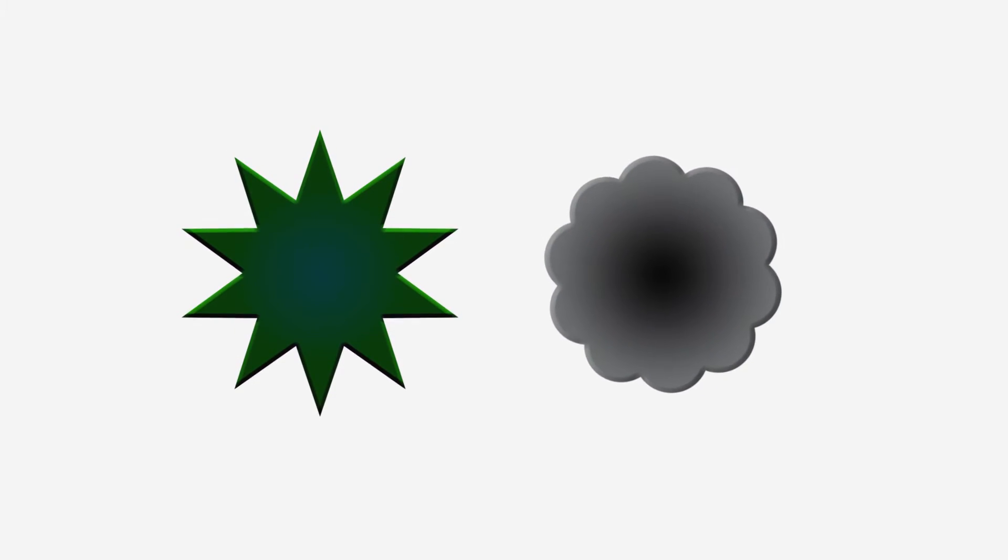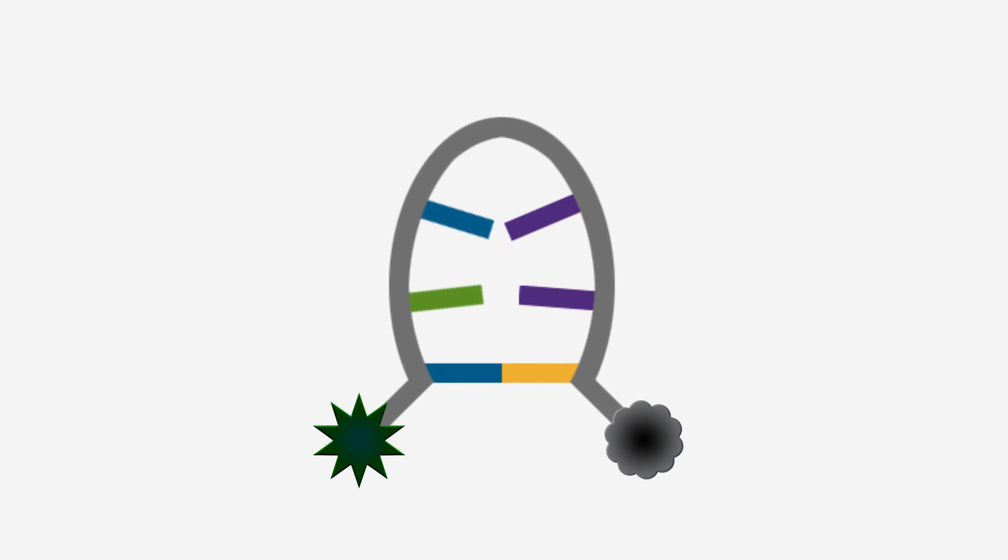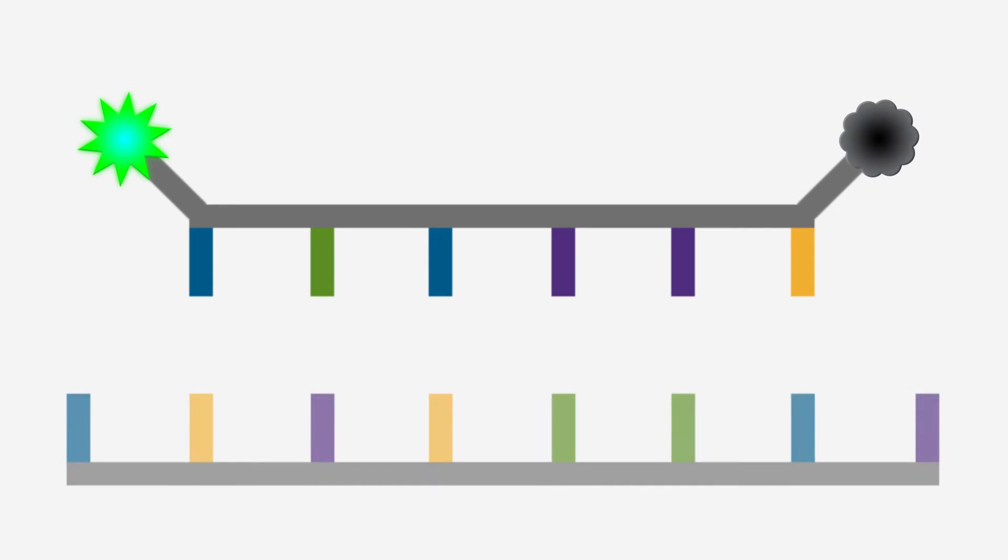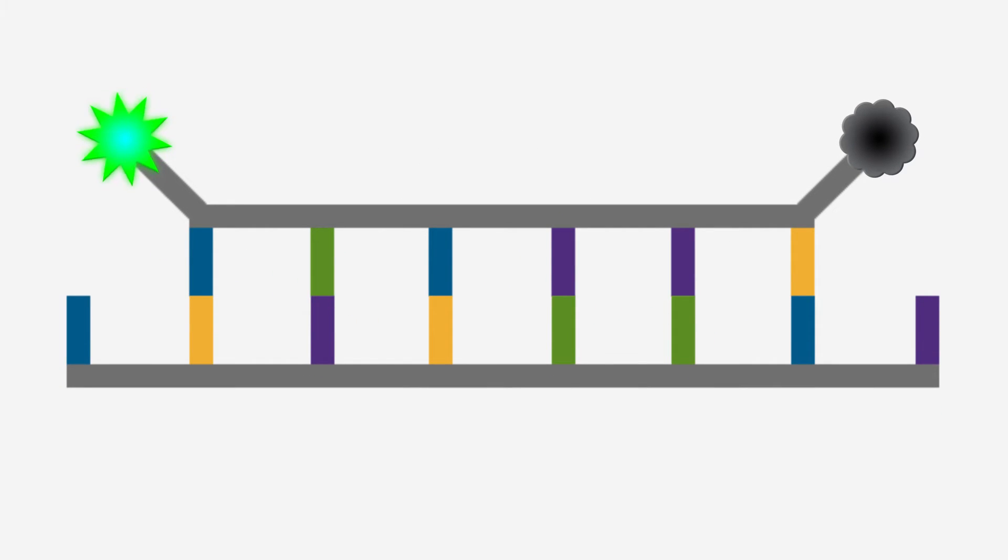Here are two examples of how quenchers can be utilized. Quenchers can be used in probes that keep reporters dark unless incorporated into a DNA strand. The fluorescence then increases if the target is present.